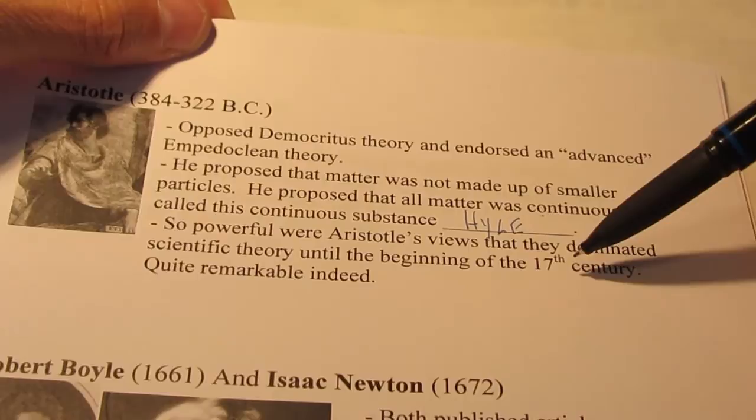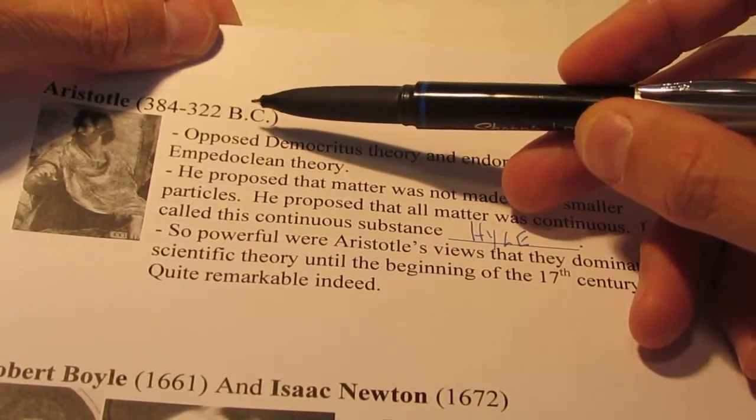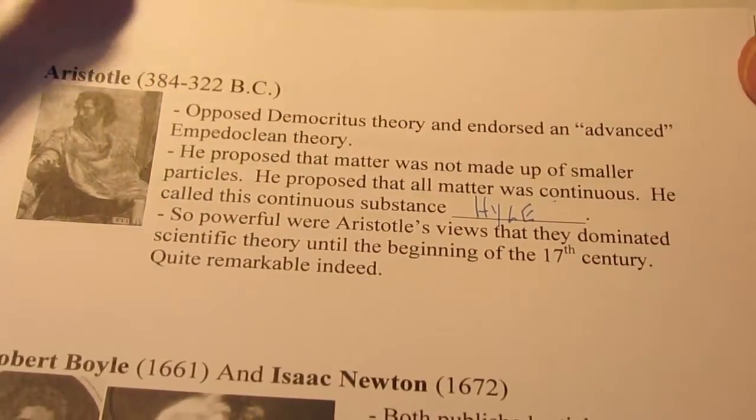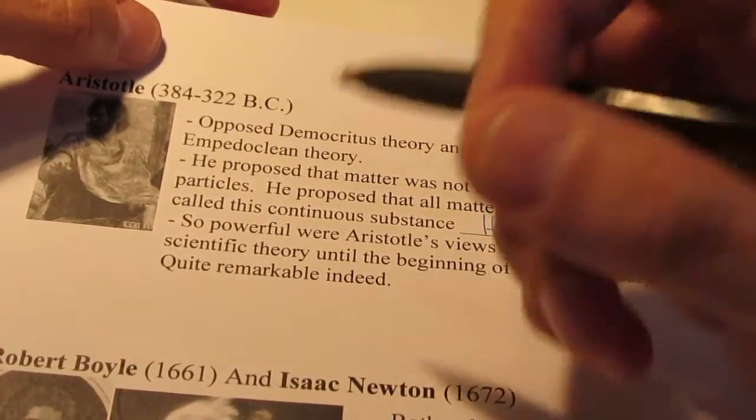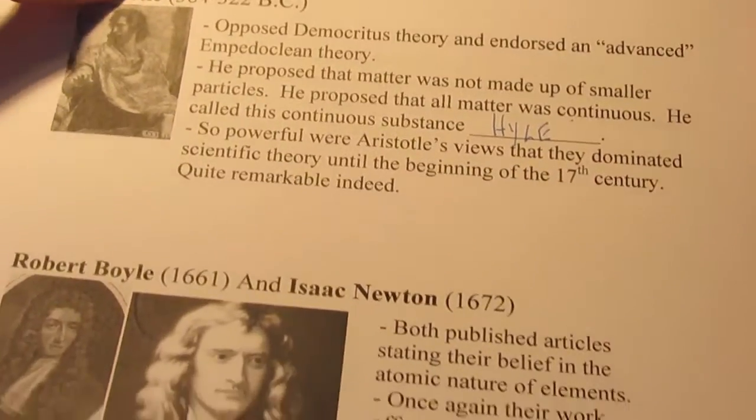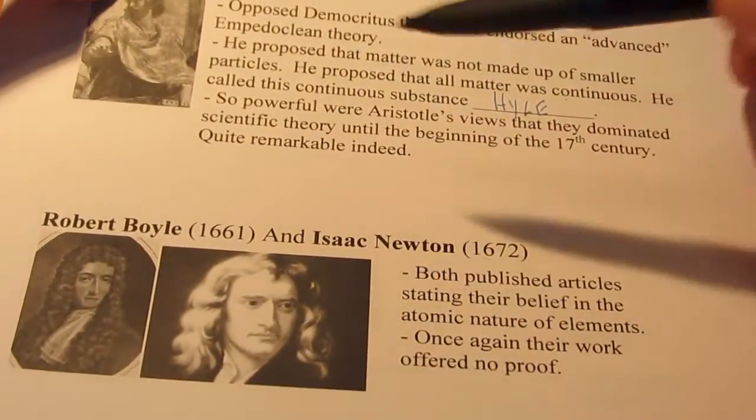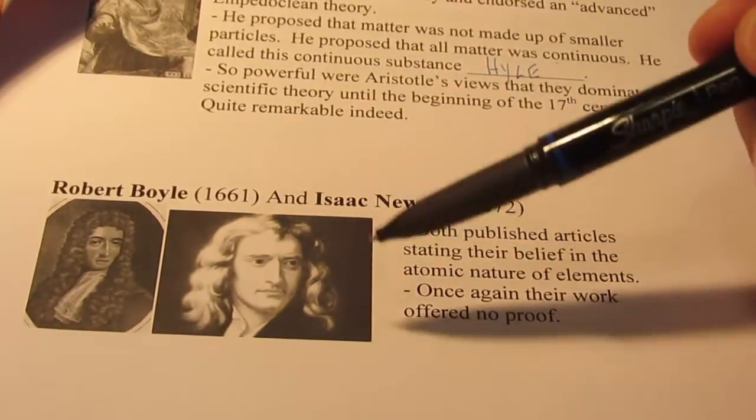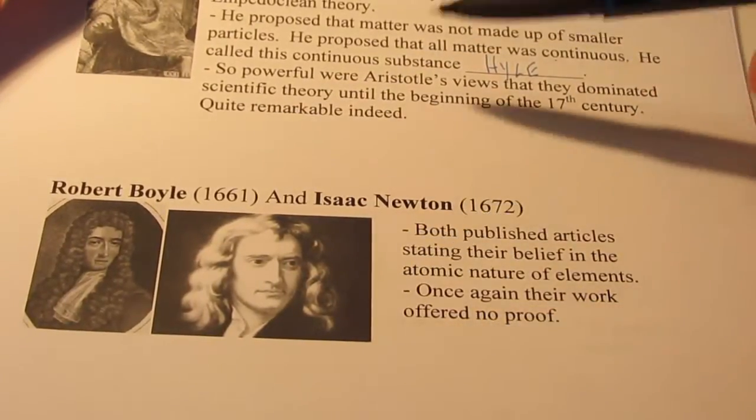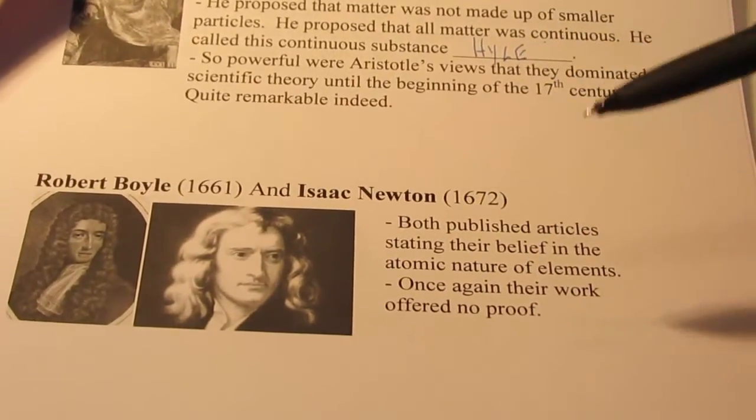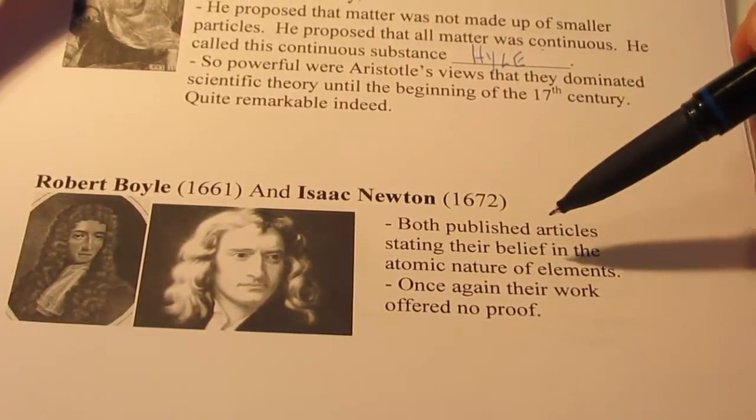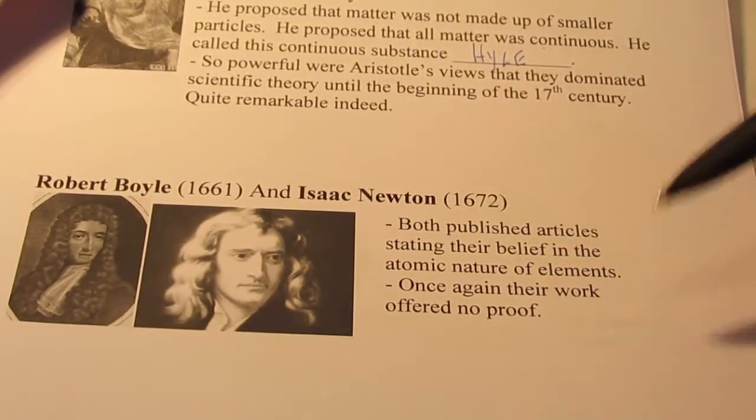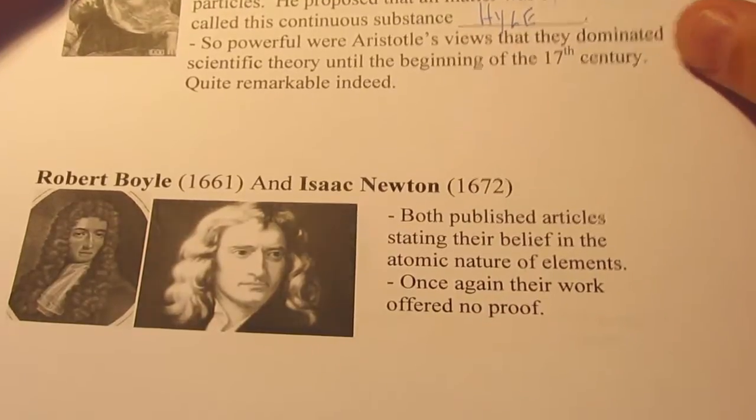Now that's the 1600s. Now he lived approximately three or four hundred years B.C. So that was almost 2,000 years where Aristotle's beliefs held true and held fast. In the mid to late 1600s, a couple other scientists now came on the scene and they began to question Aristotle and the way of thinking. They both published articles stating their belief in the atomic nature of elements, but they really didn't have any evidence to prove their theory.